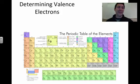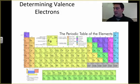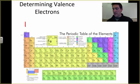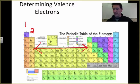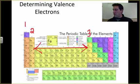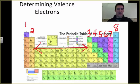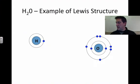A quick review on determining valence electrons: all we have to do is look at the periodic table and the groups. Everything in group one has one valence electron, and everything in group two has two valence electrons. Group 13 — I'll call it group 3 — we're not going to worry about the transition metals down here for now. The remaining groups have 3, 4, 5, 6, 7, and 8 valence electrons, at least for the purposes of learning how to do this.